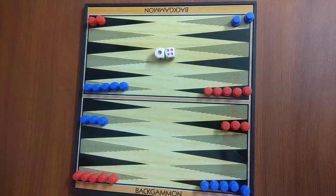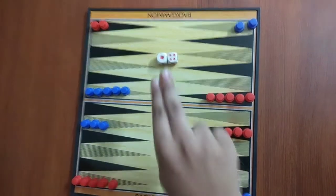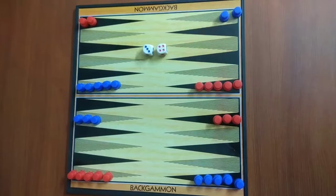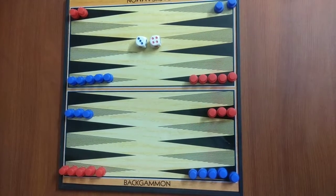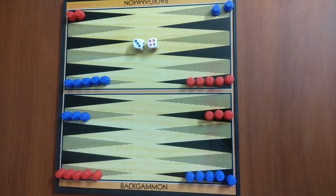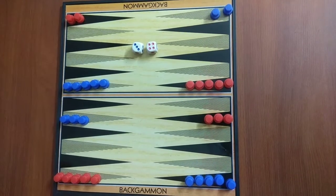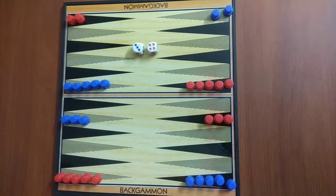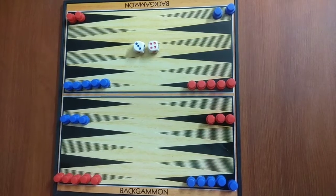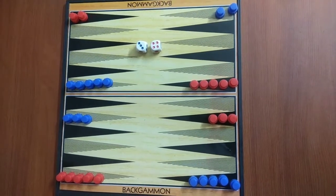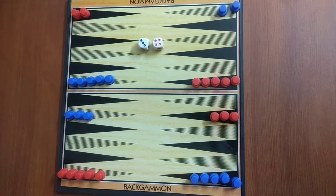To play this game, we require 2 dice. If you get 4 and 3 on dice, then player has to play 1 piece 4 points and the other piece 3 points, or he can move 1 piece 7 points.